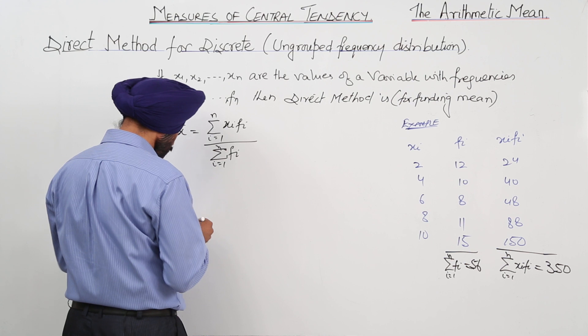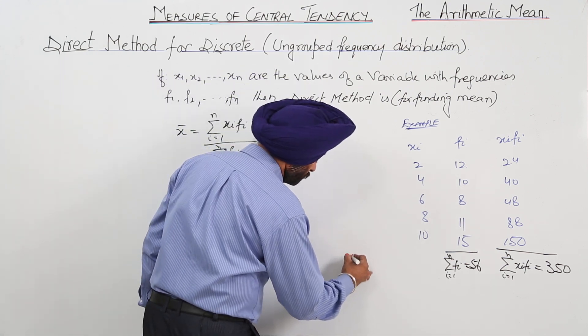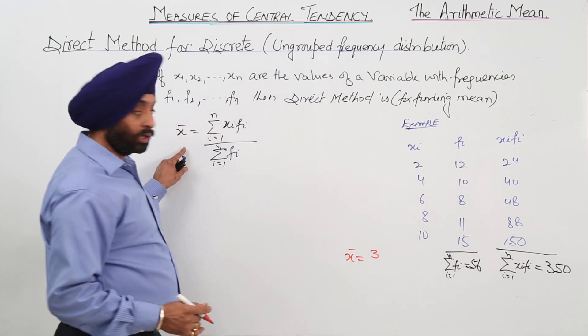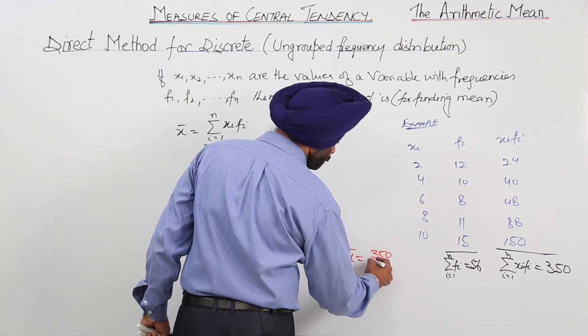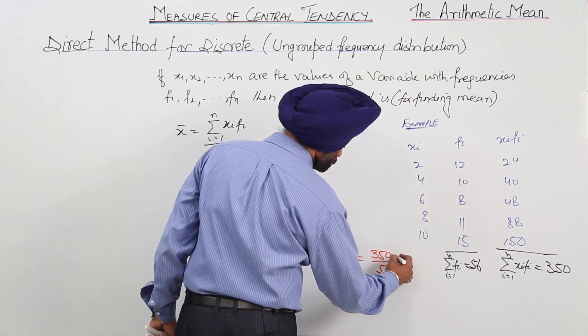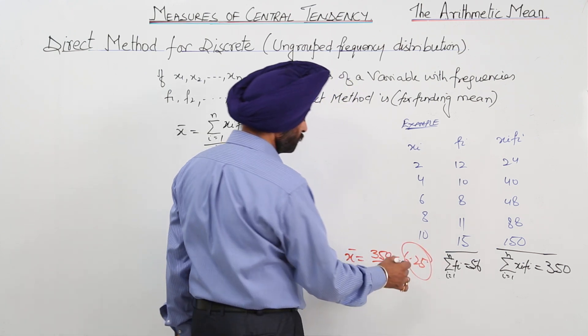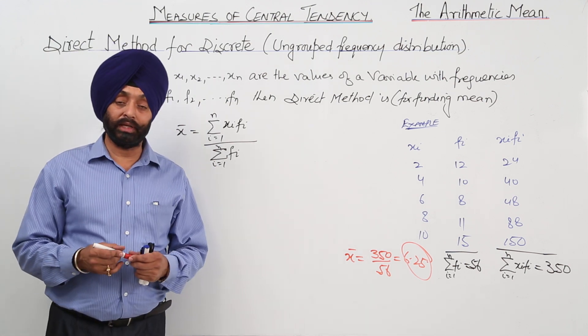So what the mean will be? x mean is equal to, first write this formula. Writing this formula, we are having 350 upon 56. This is 6.25. So this is the result. Like this we can use direct method.